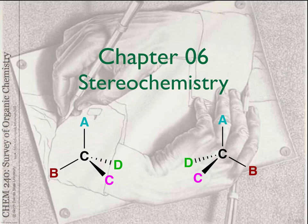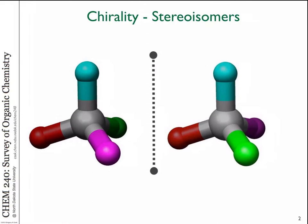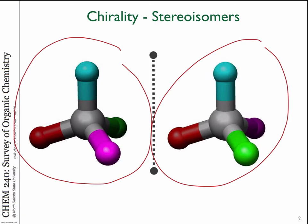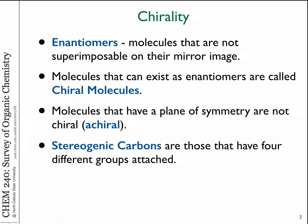I want to get back into the topic of stereochemistry because it can be somewhat confusing, and I think we need to go over some review. Recall from a week ago, we were talking about tetrahedral carbons — if they have all four different groups attached, they can be arranged in two different ways in three-dimensional space. These compounds are not identical and not superimposable. This is a type of stereoisomer we refer to as mirror image isomers, or enantiomers.